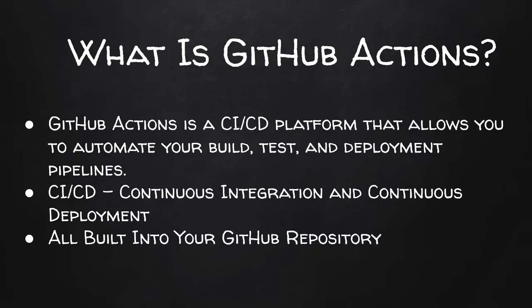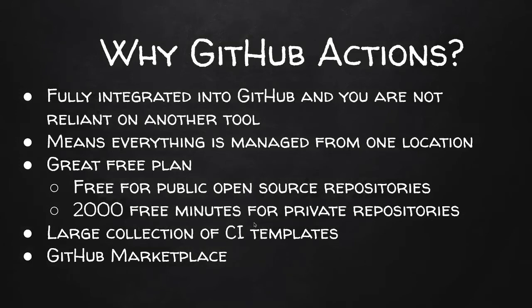These all have integrations with GitHub through GitHub Apps. GitHub Actions is built directly into GitHub and your repository, so you can manage everything from one location. GitHub Actions are fully integrated into GitHub and you are not reliant on another tool. There are other platforms and tools that offer the same functionality, but with GitHub Actions you manage it all from one spot — and you're not blocked from deploying if there's an issue with a third-party tool like Travis CI.